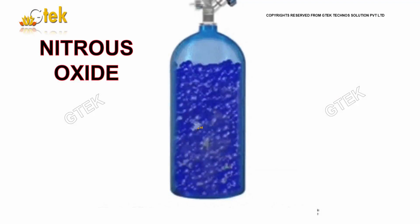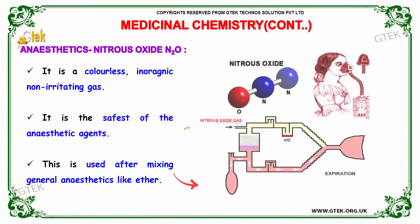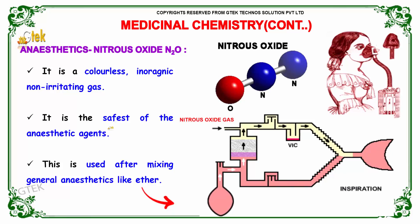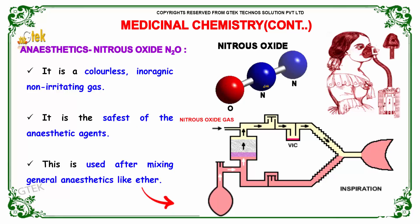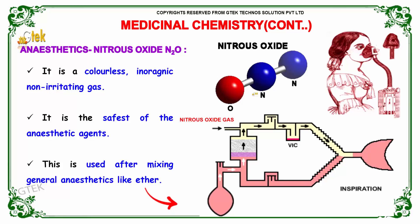Next is nitrous oxide anesthetics. It is a colorless, inorganic, non-irritating gas. It is the safest of the anesthetic agents used, and is also used for mixing with general anesthetics like ether. This is the three-dimensional structure of the N2O gas.